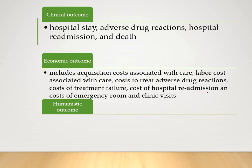Economic outcomes focus on the acquisition cost associated with care, labor costs associated with care, and many other types of services rendered. For example, in the case of clinical outcome there is readmission due to an adverse drug reaction; in the case of economic outcome, we add the dimension of cost — specifically the cost of hospital readmission.